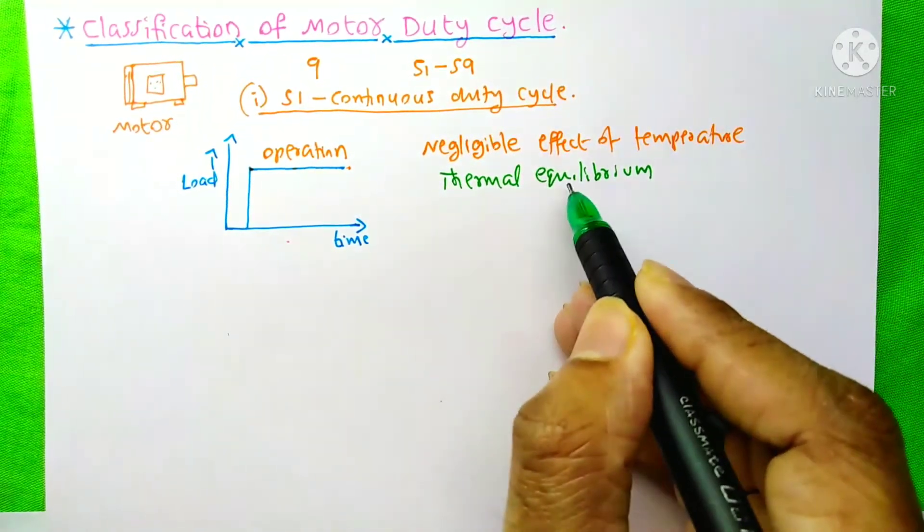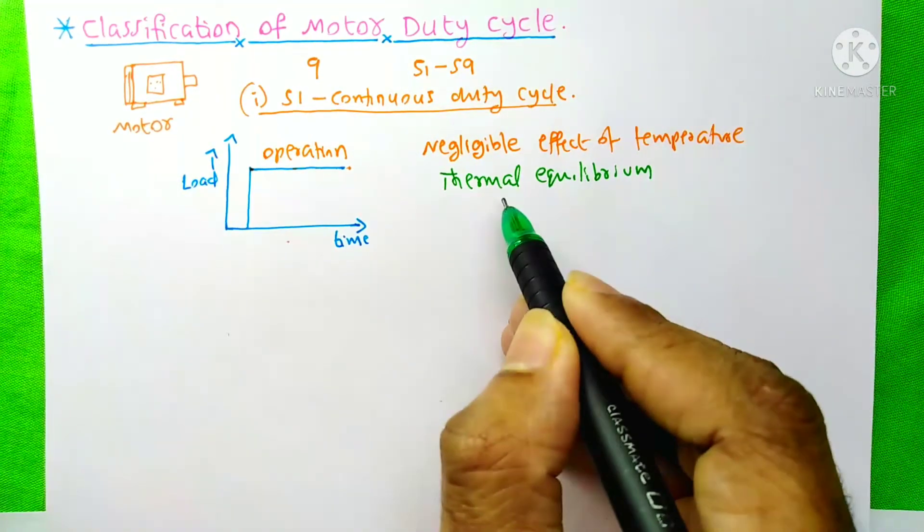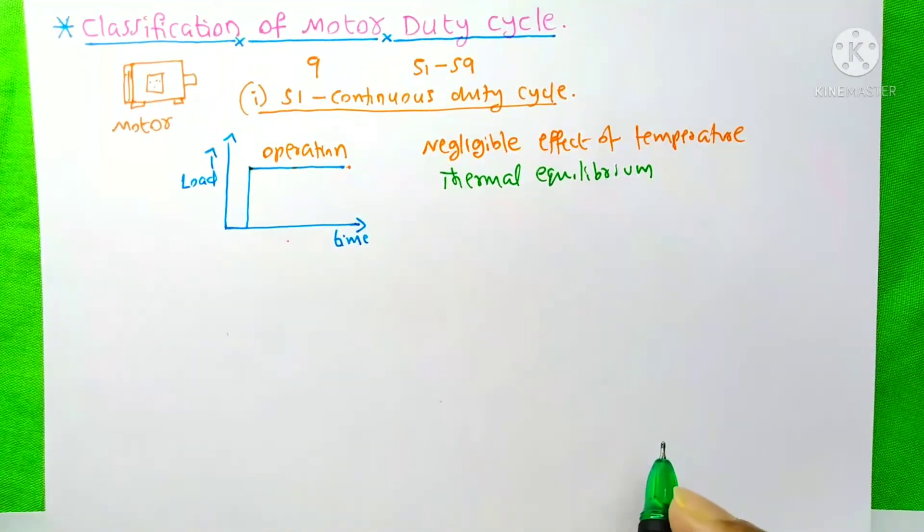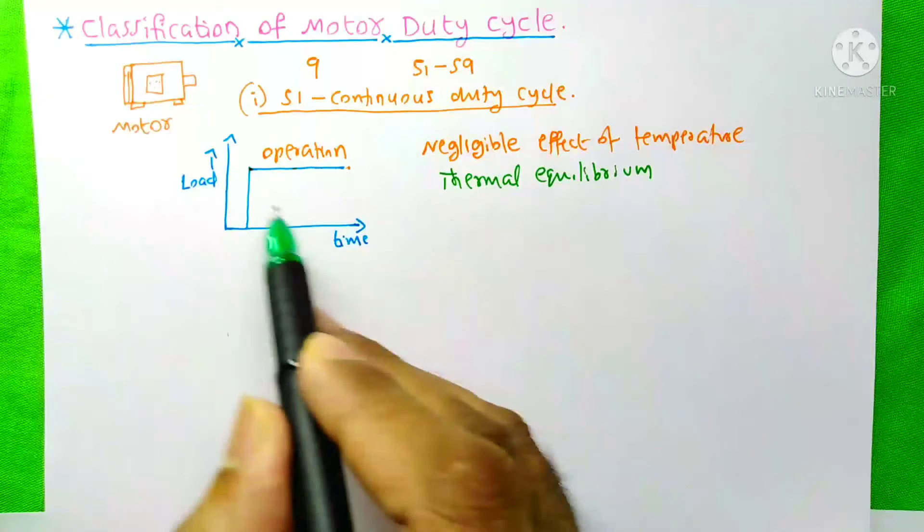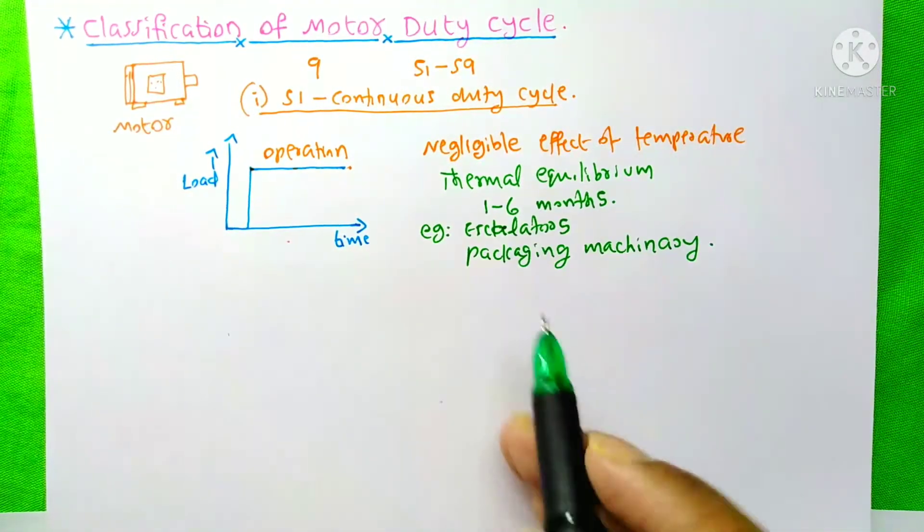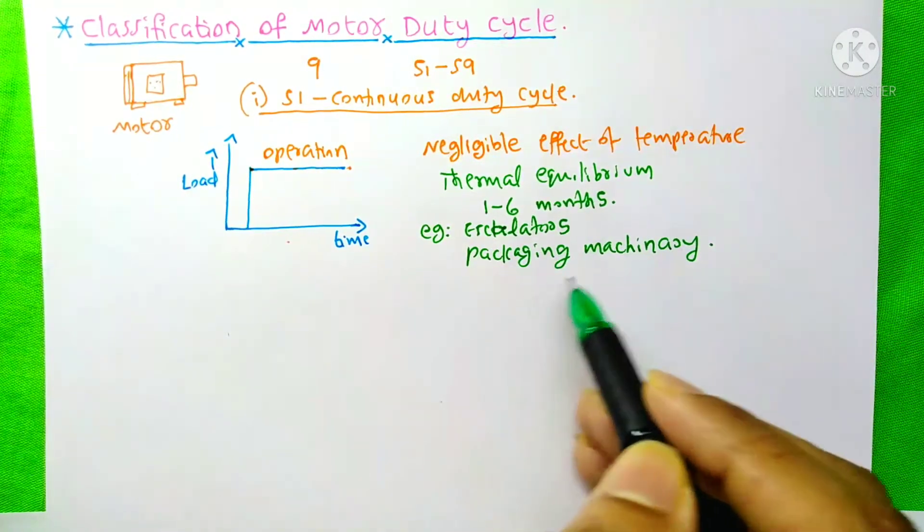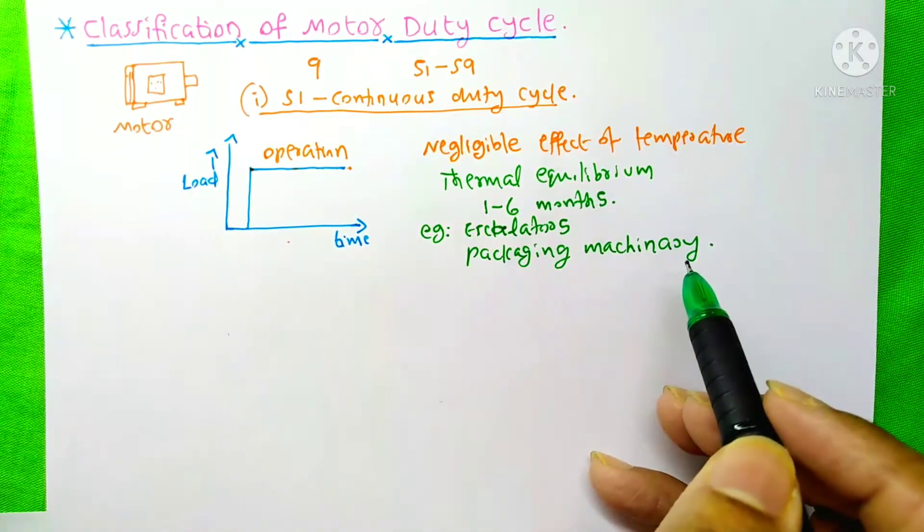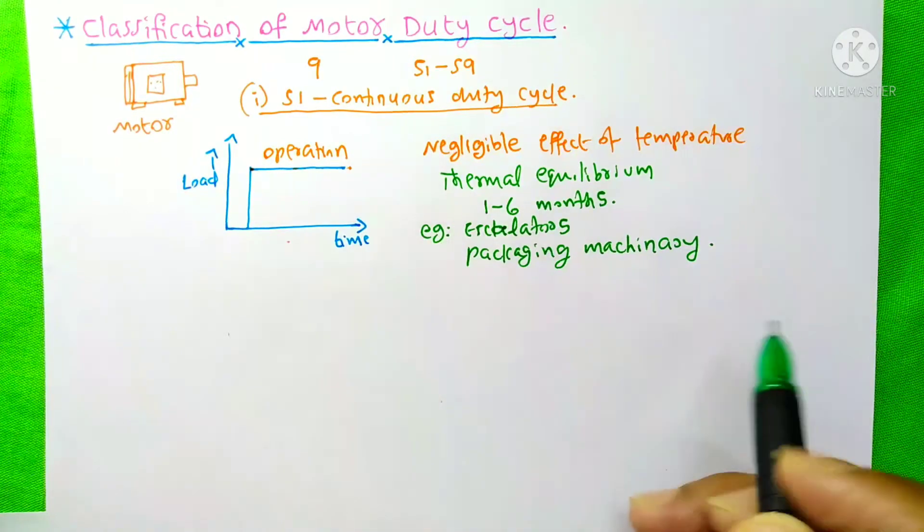That means the temperature will be on a constant state. In industry, we generally run this type of motor for 1 to 6 months continuously. The motors used in escalators and packaging machinery are examples of this duty cycle.